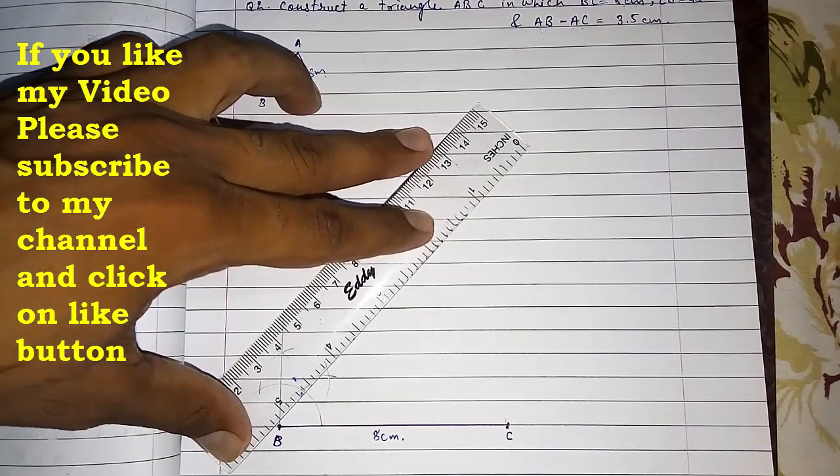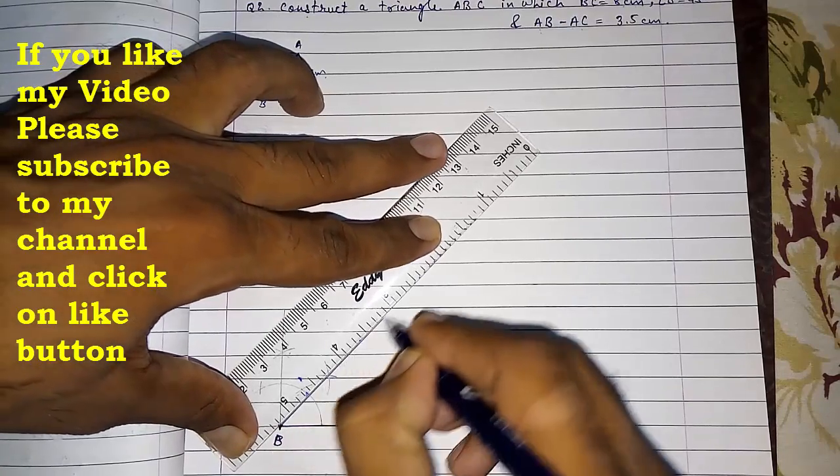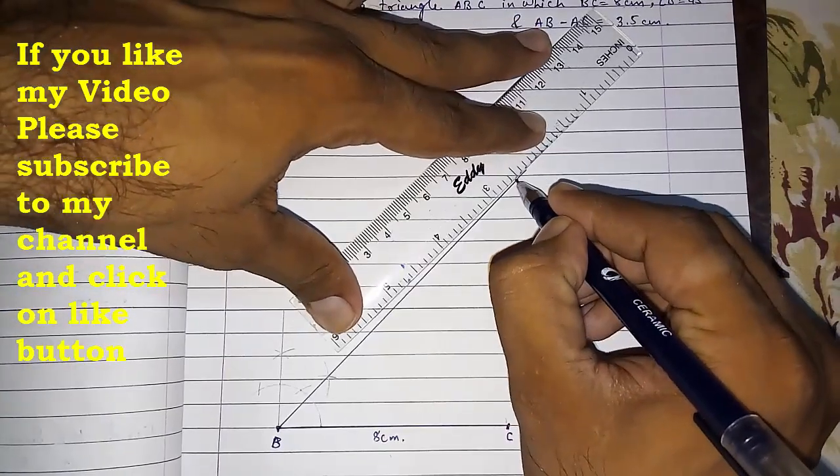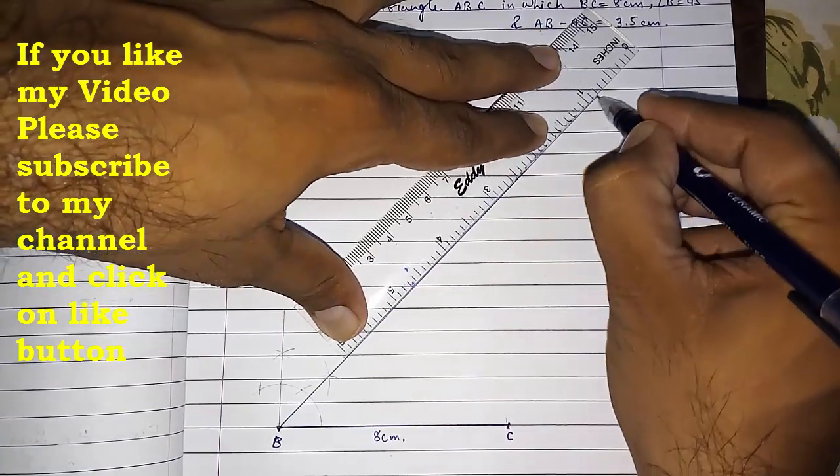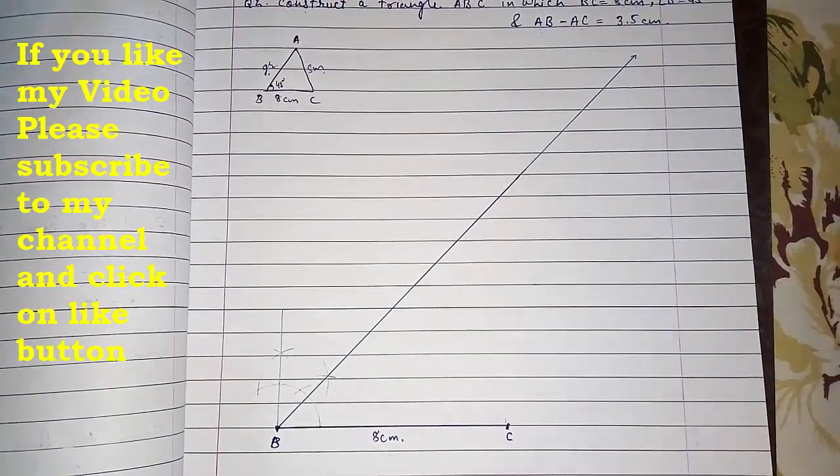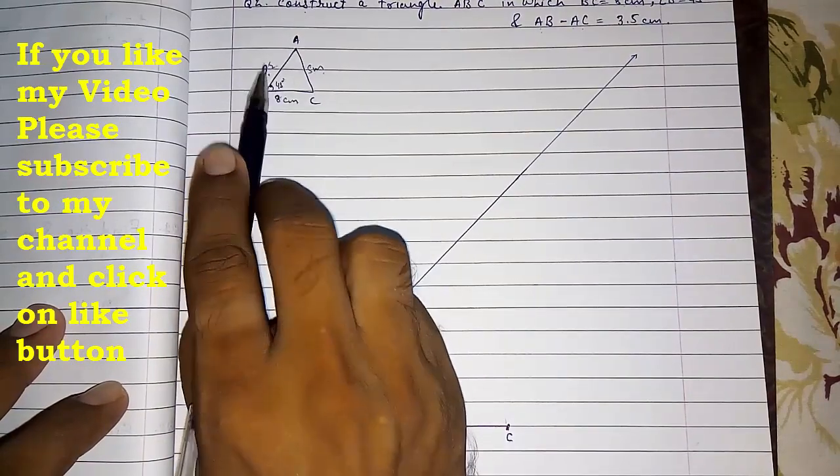Okay, I have made these two arcs. Now I have to draw a line. I am going to draw it with pen so that you can see. So this will be our 45 degrees. I am extending it. You also have to extend it very far away.